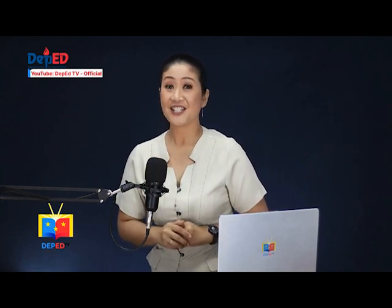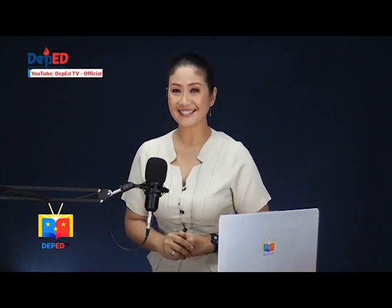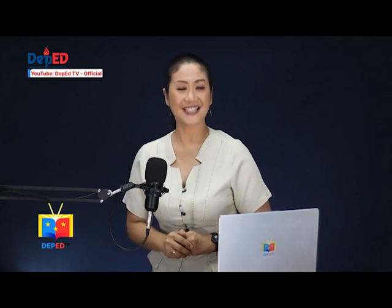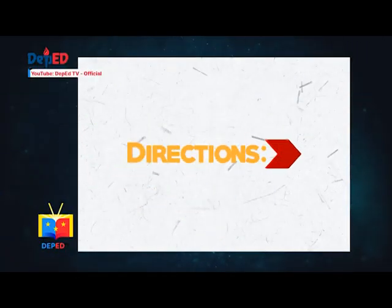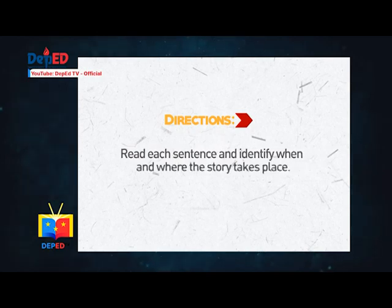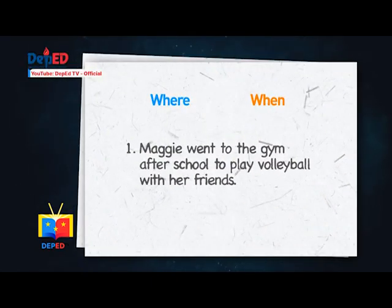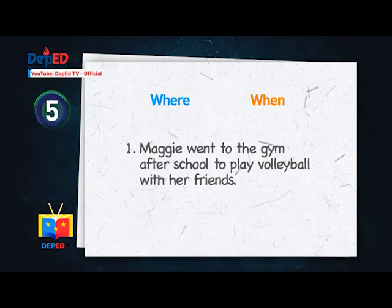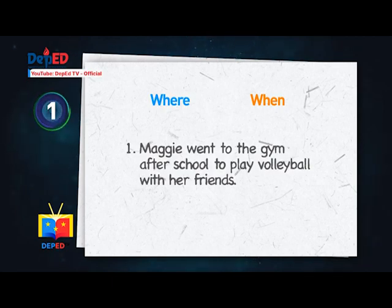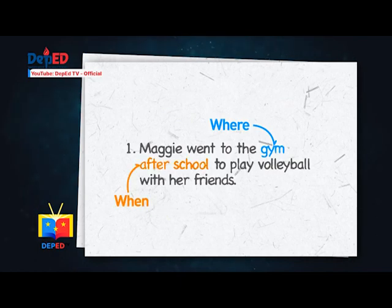Did you understand our lesson? Let's try this activity! Directions: Read each sentence and identify when and where the story takes place. Number one: Maggie went to the gym after school to play volleyball with her friends. Where? Gym. When? After school.